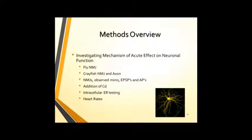On to the actual methods of this study. To investigate the mechanism of acute effect on neuronal function, we used several different preps. First, the fly neuromuscular junction. We also used crayfish neuromuscular junction and axon preps. In these preps, we observed minis, EPSPs, and action potentials. Minis are a single vesicular fusion event. EPSPs are excitatory postsynaptic potentials. Action potentials are an electrical signal that is simulated down the motor neuron of a cell. After this, we added cadmium to block calcium pumps. We also did some intracellular endoplasmic reticulum testing, and then we looked at heart rates.